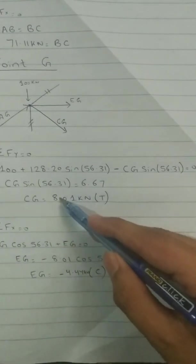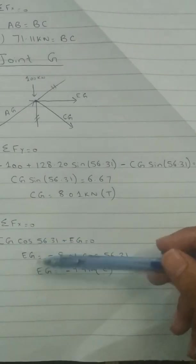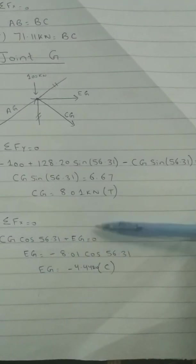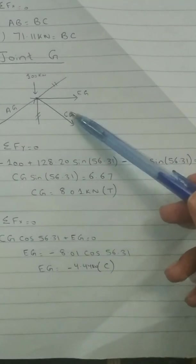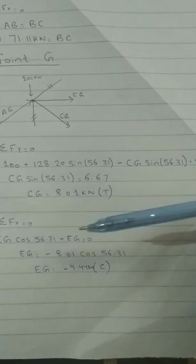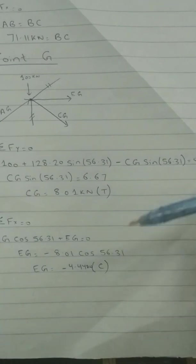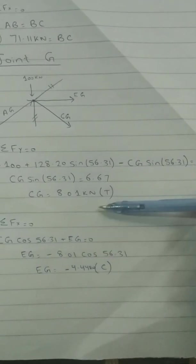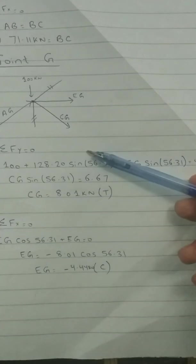And by taking the sum of forces in x direction equal to zero, you can easily calculate the force in member EG. So the basic concept is that you have to write equations, you have to solve for each joint individually. You have to write the equation, sum of force in x direction and y direction.